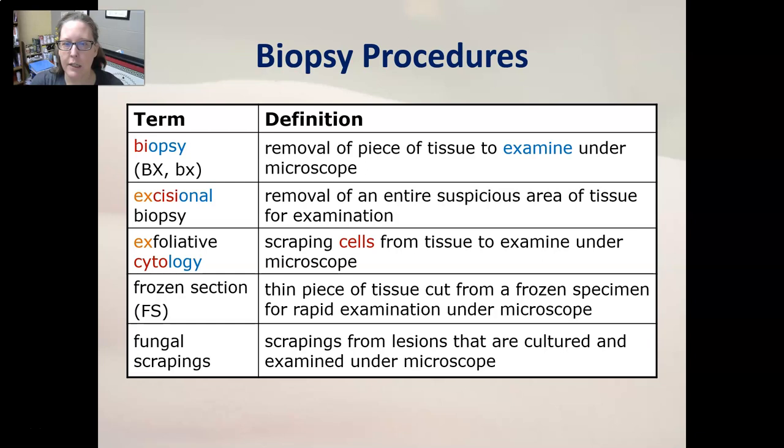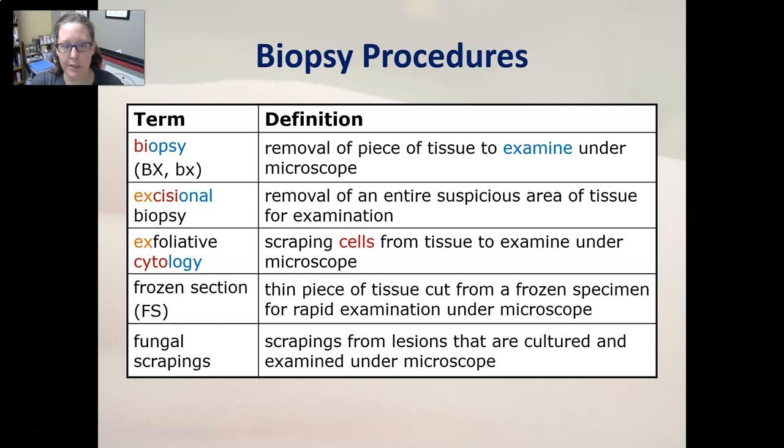Biopsy, abbreviated as Bx, is the removal of a piece of tissue to examine it under the microscope. Excisional biopsy is the removal of an entire suspicious area of tissue for examination, usually when you suspect cancer. Exfoliative cytology is the scraping of cells from tissue to examine them under the microscope. A frozen section is a thin piece of tissue cut from a frozen specimen for rapid examination under the microscope.